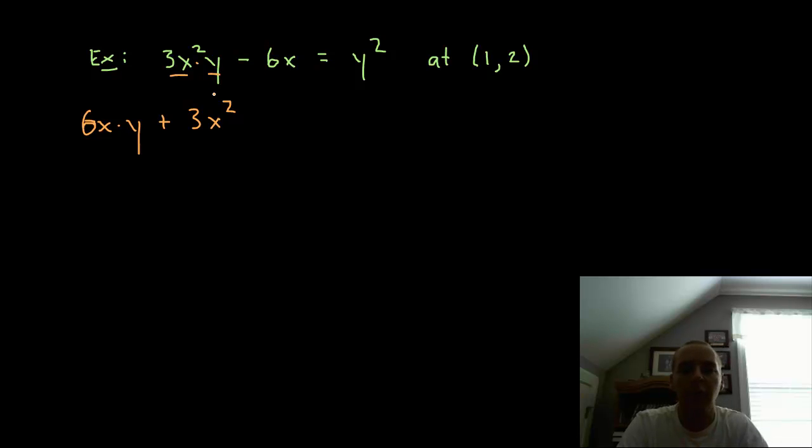Now the derivative of y is one, but when we differentiate with respect to x it would leave a dy dx, because we're differentiating with a different variable with respect to x. Minus 6 equals 2y, again dy dx from implicit differentiation.